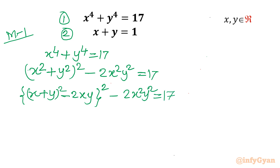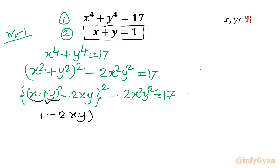Now substituting x + y = 1 from Equation 2, we get (1 − 2xy)² − 2x²y² = 17. Since 1² = 1, this becomes (1 − 2xy)² − 2x²y² = 17.